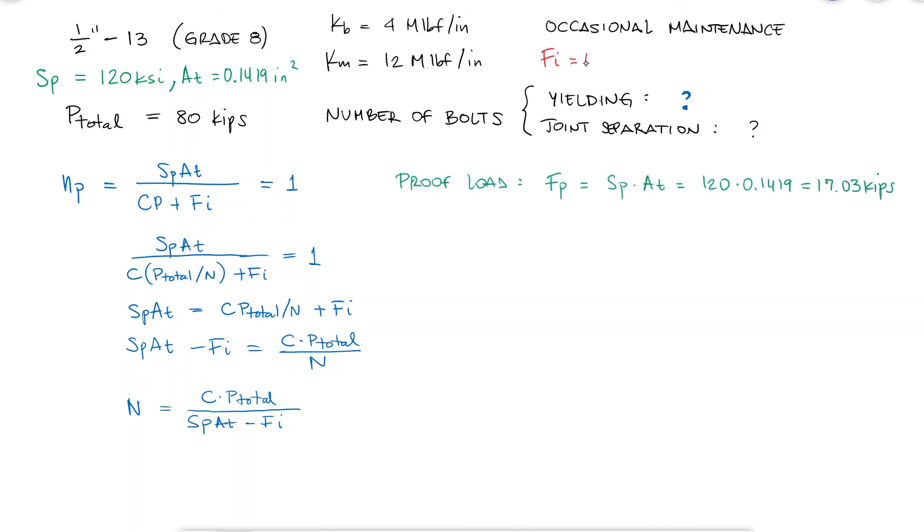With the recommended preload FI for non-permanent joints like these, we find that its value is 12.77 kips.